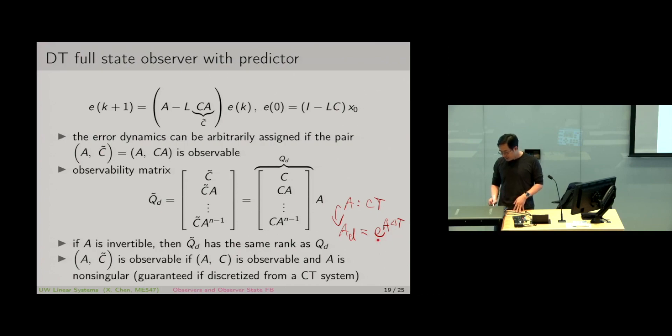If we discretize a continuous time state equation, then this discrete time A matrix is guaranteed to be invertible. The eigenvalues of the discrete time system will be e^(λ*ΔT), which is always non-zero. So in other words, we have the good news still: if we do this observer with predictor and corrector type design, usually we will be able to place the eigenvalues the way we want.